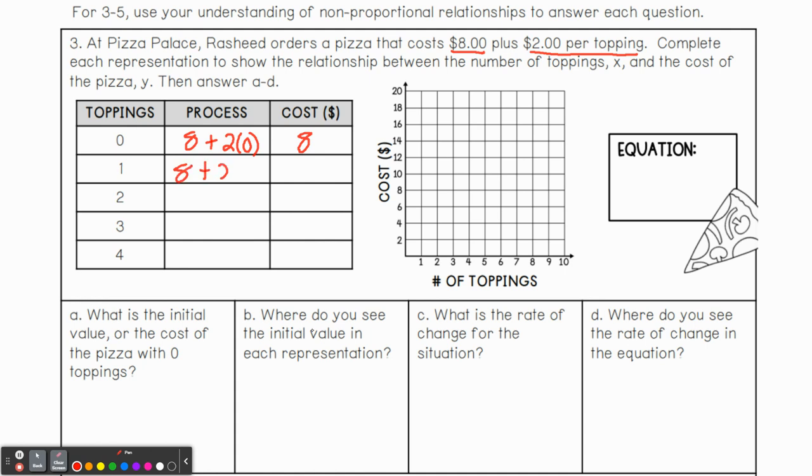So what about when we add one topping? Well, then we'd have $8 plus $2 per topping times one topping, which would give us $10. And we can keep this going on. Two times two would give us 12. Another one, two times three now would give us 14. And of course, two times four would give us 16.